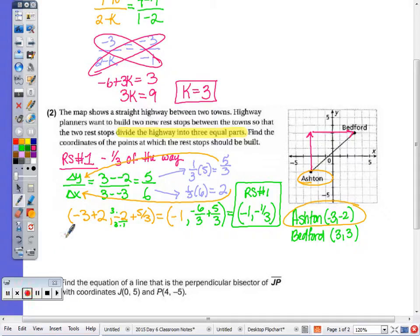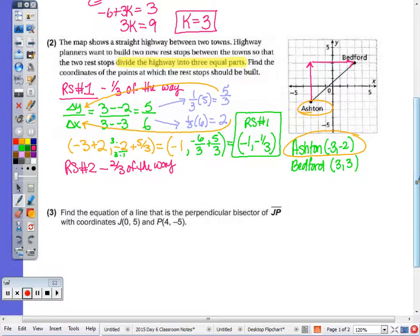Rest stop number 2 is going to be 2 thirds of the way, or distance from Ashton to Bedford. So again, looking at change of y over change of x. I'm going to use the slope already. I found the slope above in doing the work for rest stop number 1. That's 5, 6. Now I'm going to take 2 thirds of 5, and 2 thirds of 6. I can't take 2 thirds of 5, so I'm going to leave that as 10 thirds. But 2 thirds of 6 is 4.